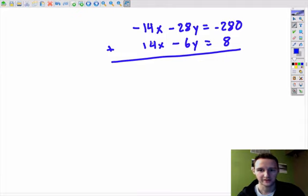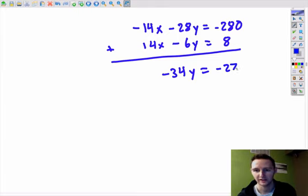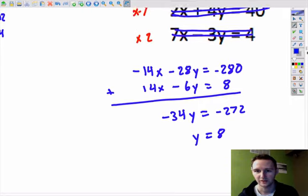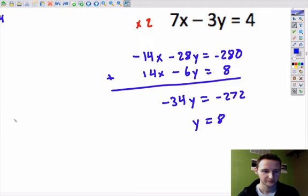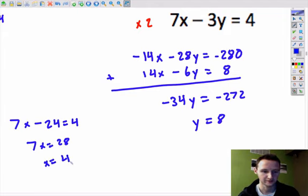So, the x's drop out. There's no x's left. We end up with a negative 34y equals that's going to be negative 272. And I don't know this off the top of my head, so calculator, 272 divided by 34, y equals 8. Going back up to one of our original equations up here, let's take our y equals 8, put it in for y. We get 7x minus 3 times 8 is 24 equals 4. 7x equals 28, x equals 4. So, our solution 4 comma 8.